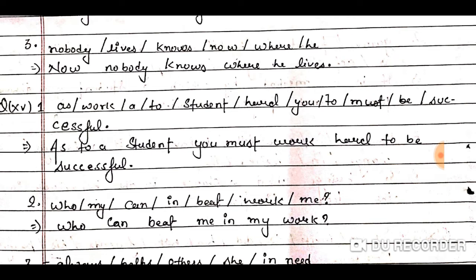Question number three: nobody's / lesson / leaves / notes / less now / where / he. The adverb 'now' comes first. The correct answer is: Now nobody knows where he lives. The sentence contains two clauses — the principal clause 'now nobody knows' and the subordinate clause 'where he lives'.